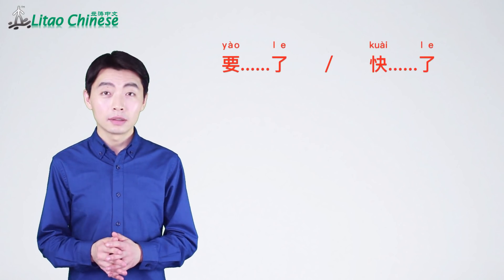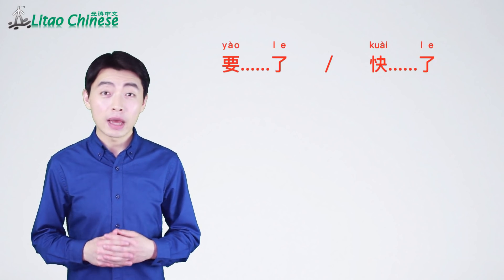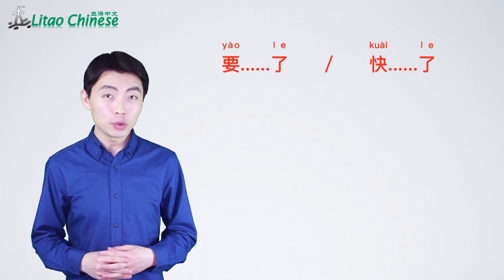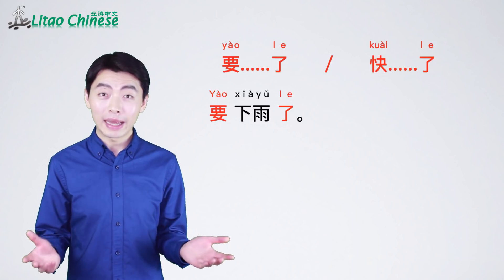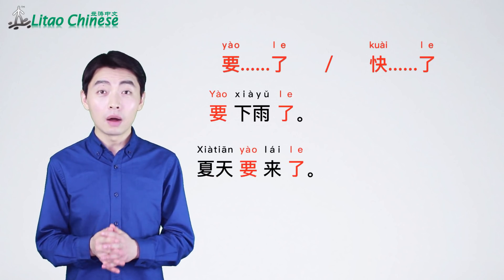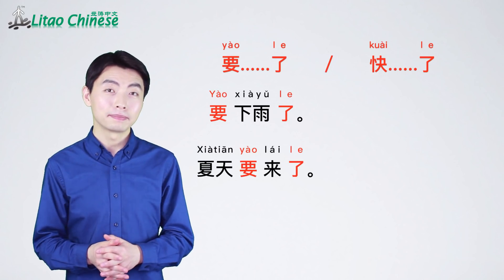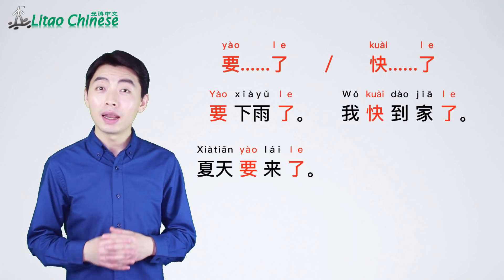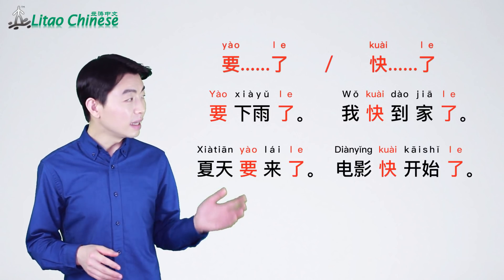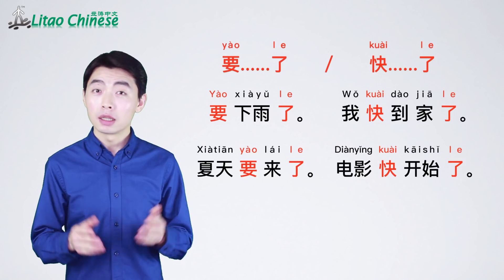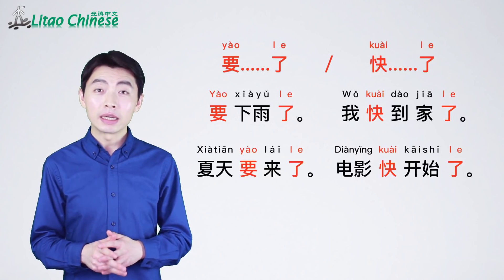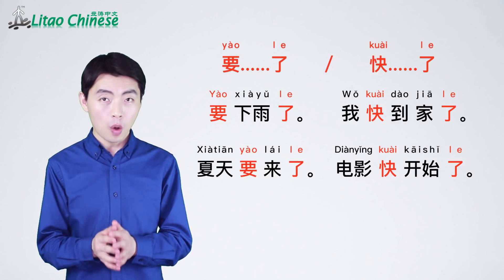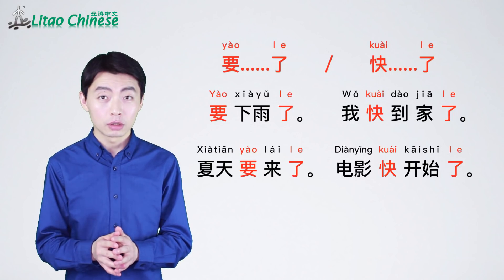We use the pattern 要了 (yào le) or 快了 (kuài le) to indicate something is going to happen soon or there will be a new situation. For example: 要下雨了 (yào xià yǔ le) — it's going to rain soon; 夏天要来了 (xià tiān yào lái le) — the summer is coming; 我快到家了 (wǒ kuài dào jiā le) — I will be home soon; 电影快开始了 (diàn yǐng kuài kāi shǐ le) — the movie is about to begin. In these sentences, le is paired with 要 or 快 for the future, not the past.